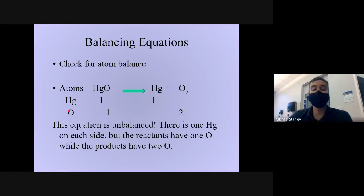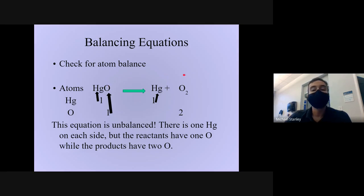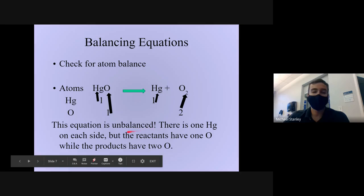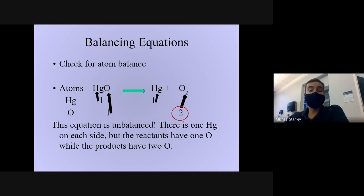First we check if our atoms are balanced on either side. On our reactant side we have one Hg atom, and on the product side we have one Hg atom — one and one, that part is balanced. Let's look at our O's. On the reactant side we have one oxygen atom, and on the product side we have two oxygen atoms. This equation is unbalanced. We have one O on the reactant side and two O's on the product side — this is not good.